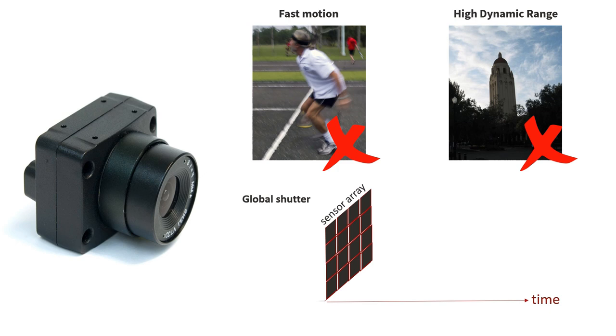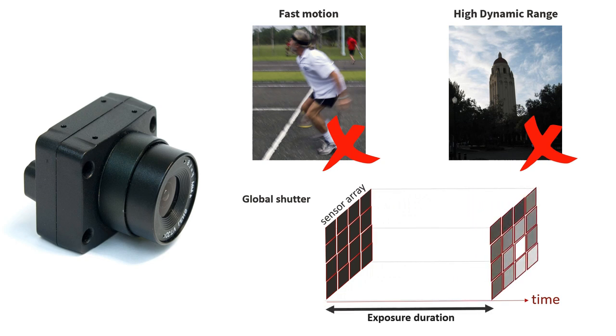With global shutter, implemented in most high-end cameras, all pixels integrate light at the same time for the same amount of time. This global shutter induces a loss of dynamic range because some pixels integrate too much light, while others should integrate for longer, and can also induce motion blur.